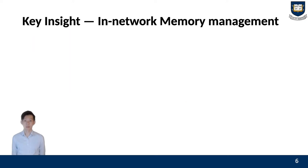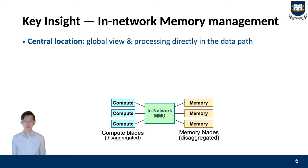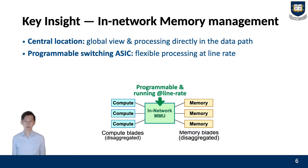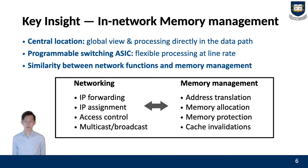Our key insight to break this trade-off is in-network memory management. First, the location of the network is the same as the location of the MMU in traditional architecture. The network is placed in the middle of disaggregation blades, so it has a global view of all packets passing between blades, and its processing is done directly on the data path. Second, the programmable switch provides flexibility and line-rate processing. Lastly, networking and memory management share similar primitives — for example, IP forwarding translates IP addresses and sends packets to the right destination, similar to address translation and forwarding requests to the correct memory blade.